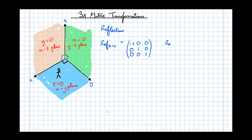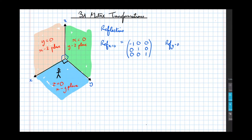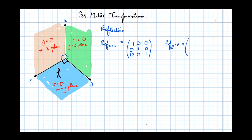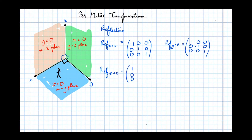By a similar process, reflecting in the plane Y equals 0 takes a coordinate and reflects it to the opposite side of that plane. The Y coordinates are made negative, while the X and Z coordinates stay the same — giving the identity elements for X and Z with a negative entry for Y. Similarly, reflection in Z equals 0 gives the matrix with identity for X and Y, and minus 1 for the Z entry.